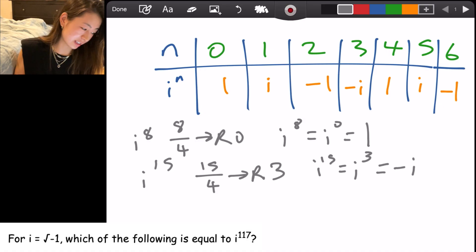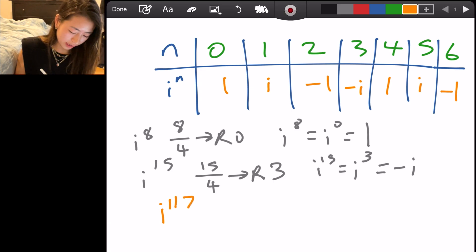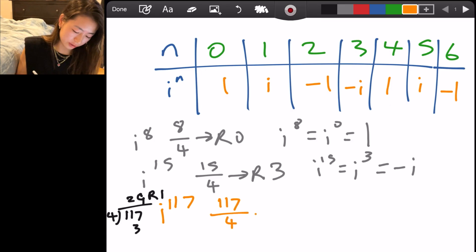So yes, exactly. For i to the 117 power, we have 117 divided by 4. So if I write it on this side here, 117 divided by 4 remainder 1. Here we get a remainder 1, which means that i to the 117 equals i to the 1, which equals i.